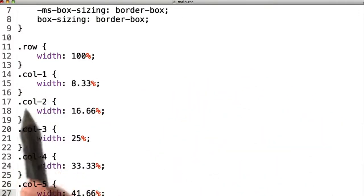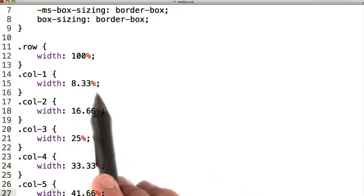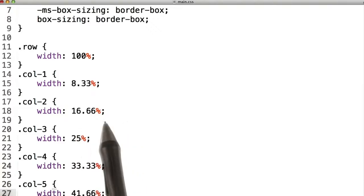You'll see column one, column two, column three, just like we decided to do before. And each width is set to a percentage of the page. Column one is 1/12th of the page. Column two is 2/12th of the page. Column three is 3/12th of the page, and so on.